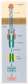Caspase activity is regulated by the BCL2 family, and some members of this family promote apoptosis while others inhibit it. Promotion of apoptosis involves mitochondrial damage, cytochrome C release, and caspase activation.